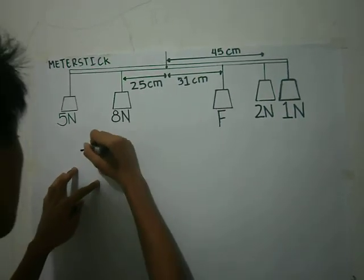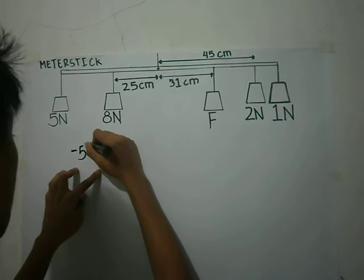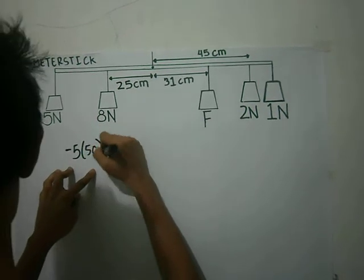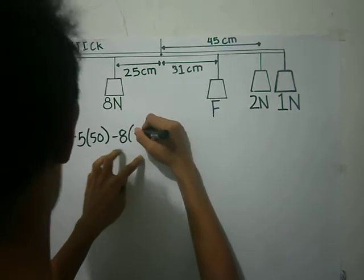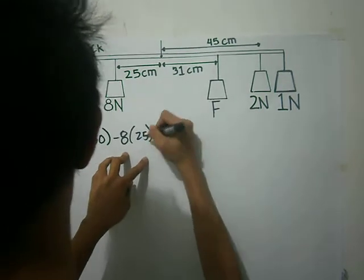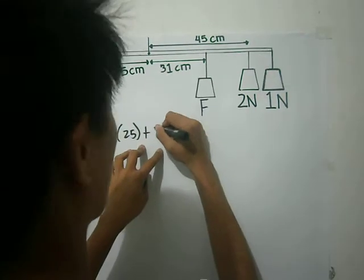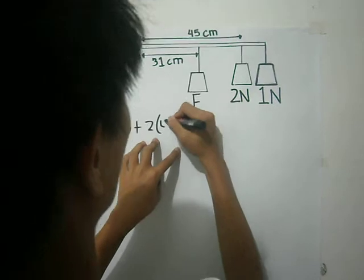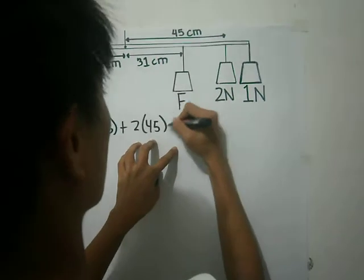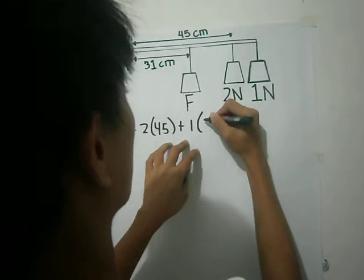So negative 5, 50, negative 8, 25, plus 2, 45, plus 1, 50.